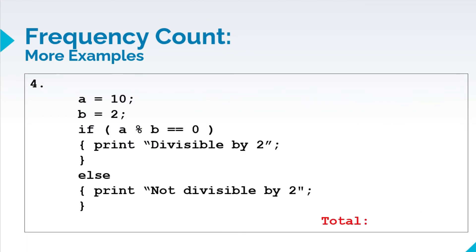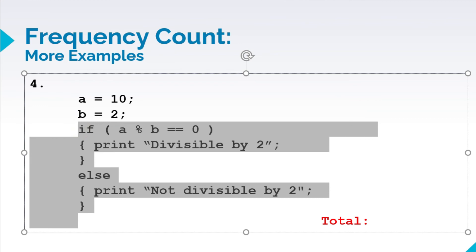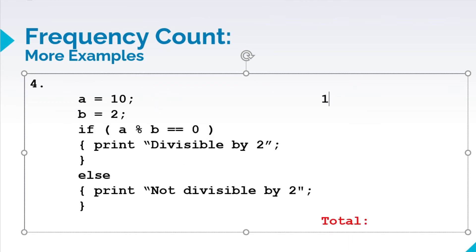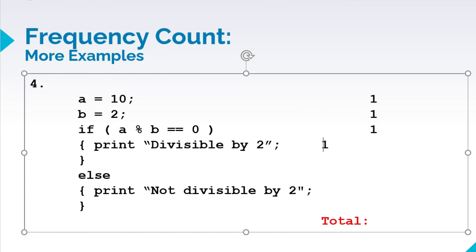And lastly, we have the use of conditional statements. These are declared outside the if-else condition, so this is counted as 1. b is equal to 2, counted as 1. Then our condition, 1. Next, let's have the different statements in our if-else. So if we have print divisible by 2, that is counted as 1. And print not divisible by 2, counted as 1. Whichever is the maximum of the two statements, that is the one we take.